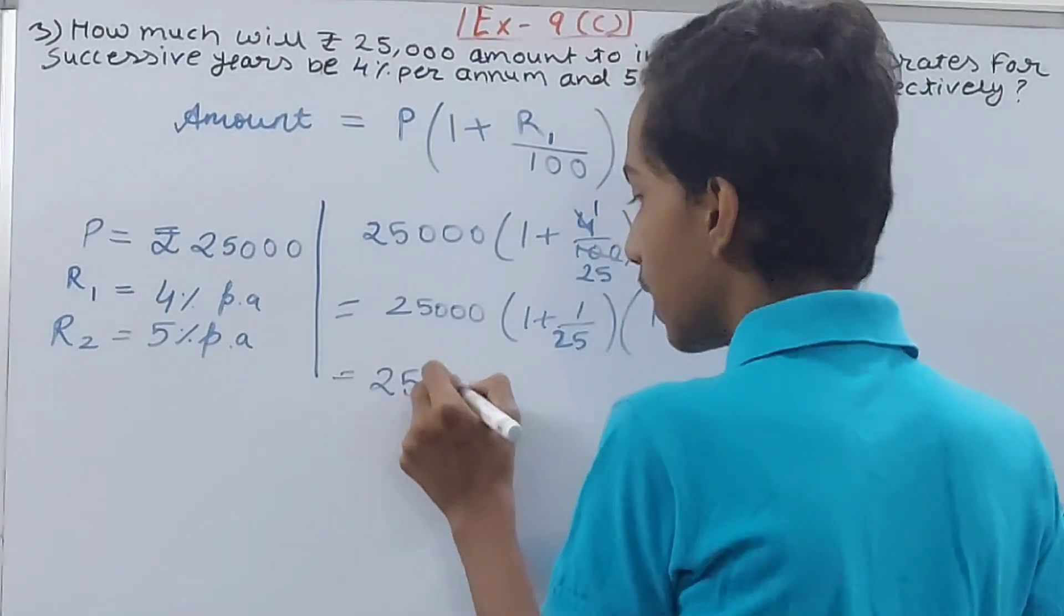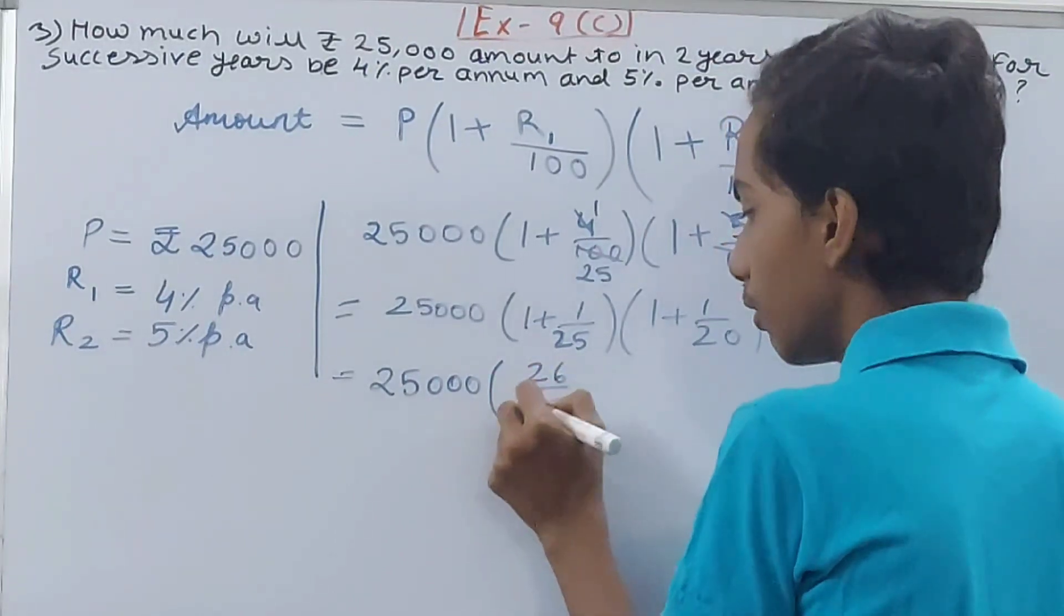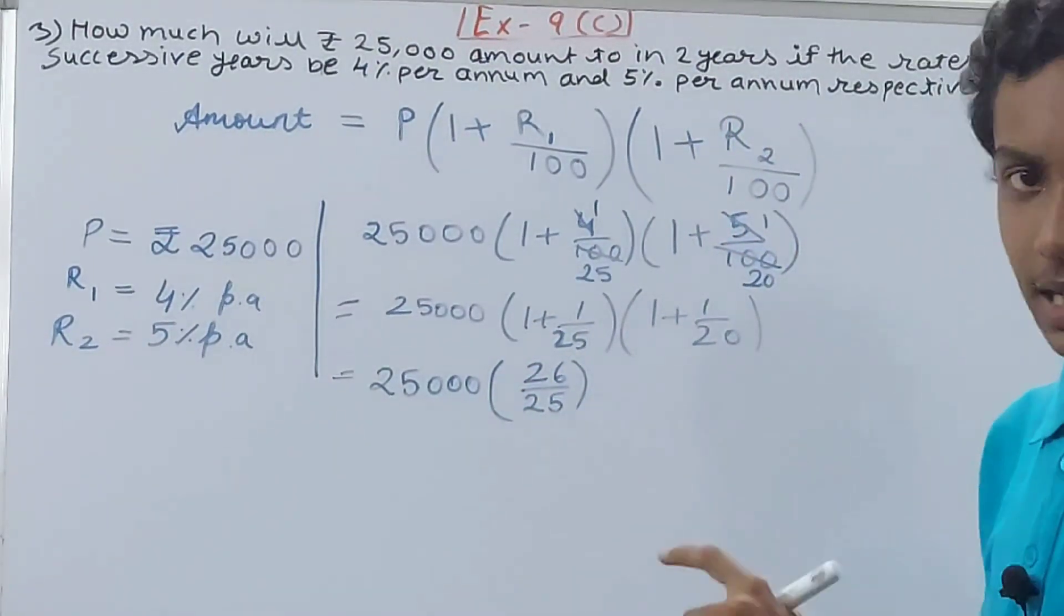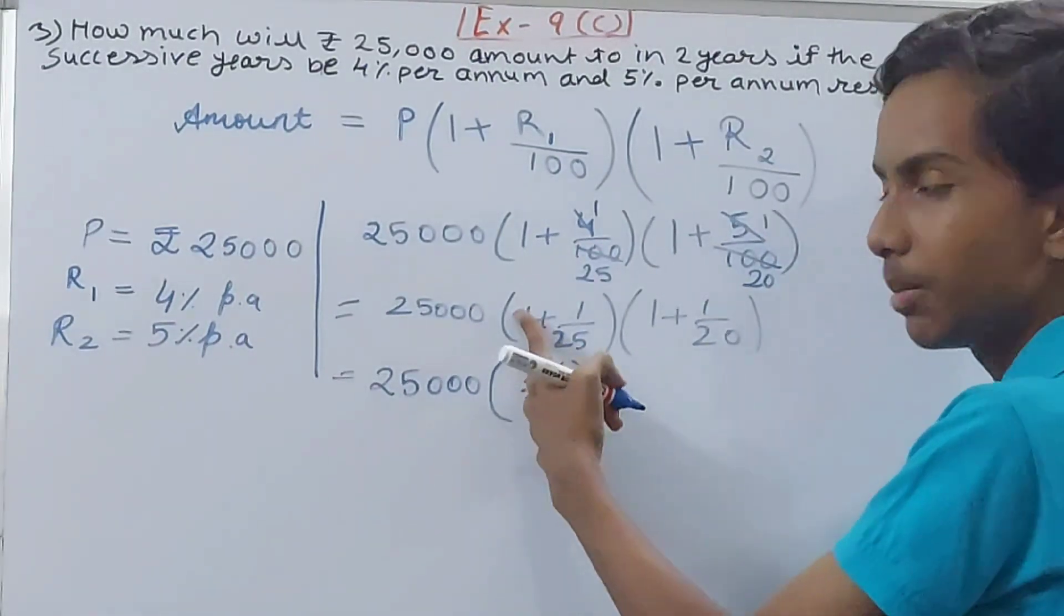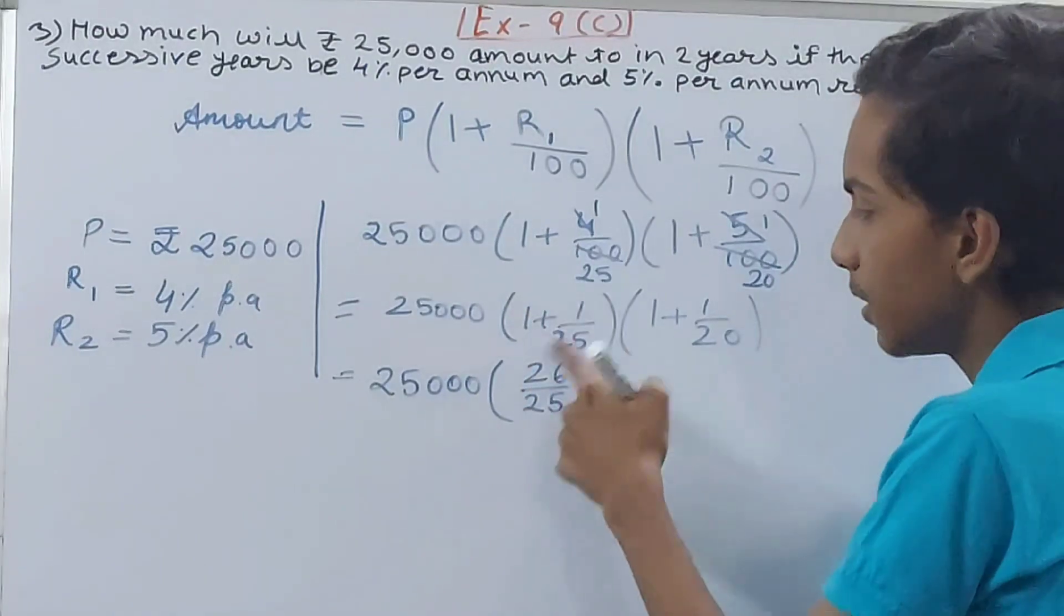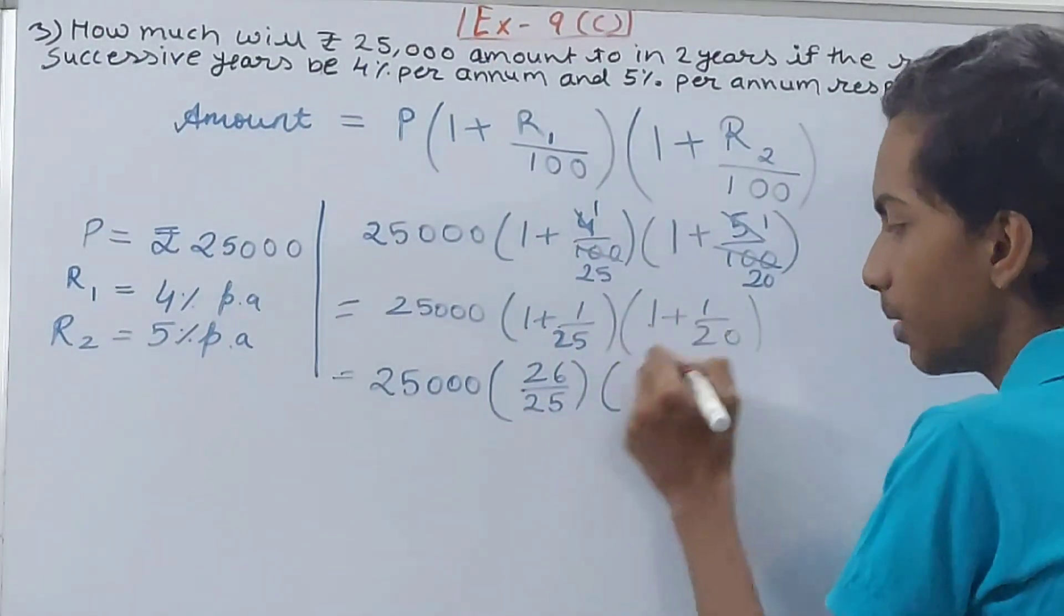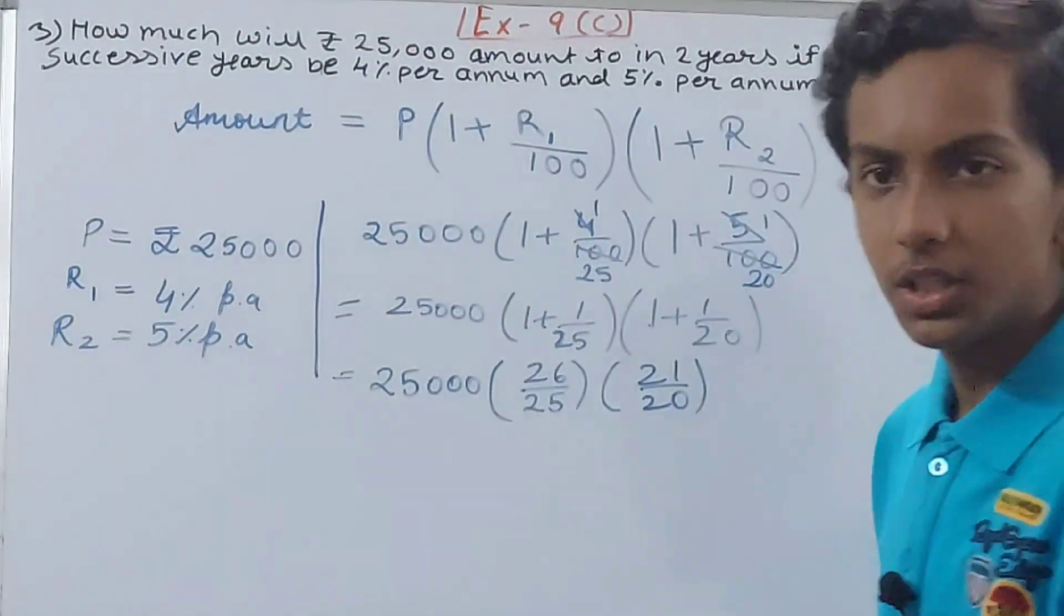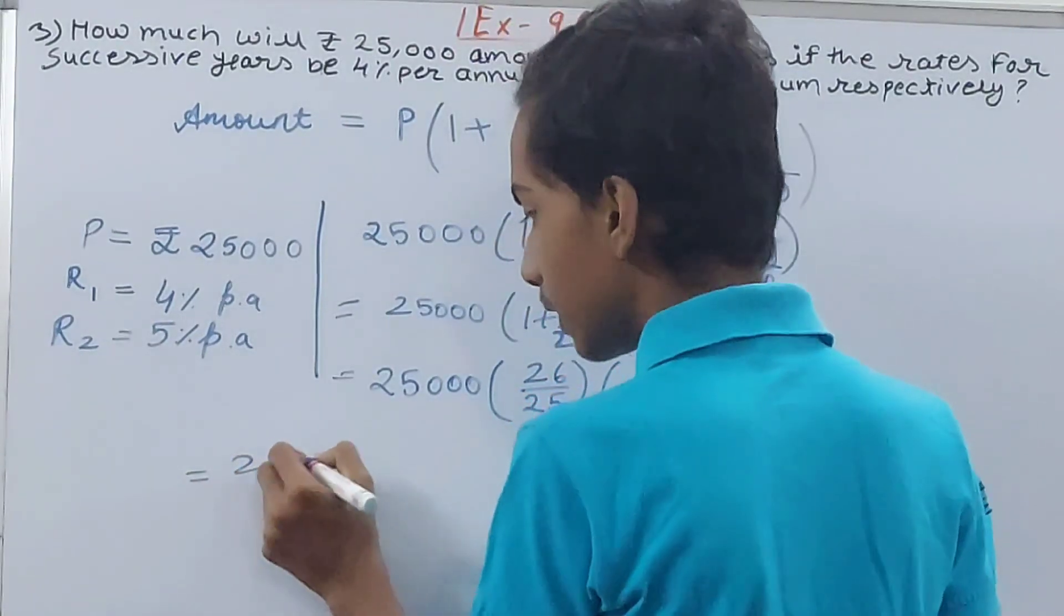these brackets and do the multiplication. Very simple step: 25,000 × 26/25 × 21/20. Cancel this, cancel this. 26 and 2, I will cancel - 1 and 13 times. Now 25 and 2500, also we will cancel - 100 times. So you have got 100 × 13